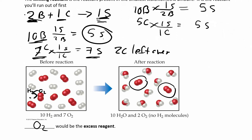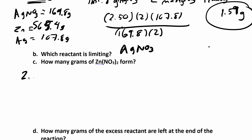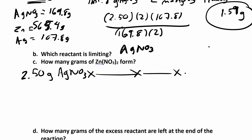So I have 2.5 grams of the silver nitrate. See if you can set up this problem: grams to moles, moles to moles, moles to grams. I have molar mass over here, and I need a molar mass over here. So I still need to calculate that molar mass because now we're going to zinc nitrate.